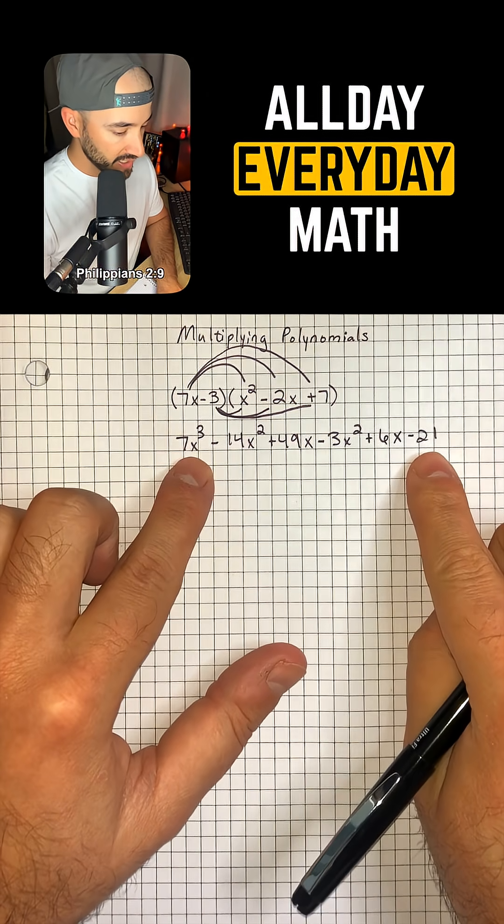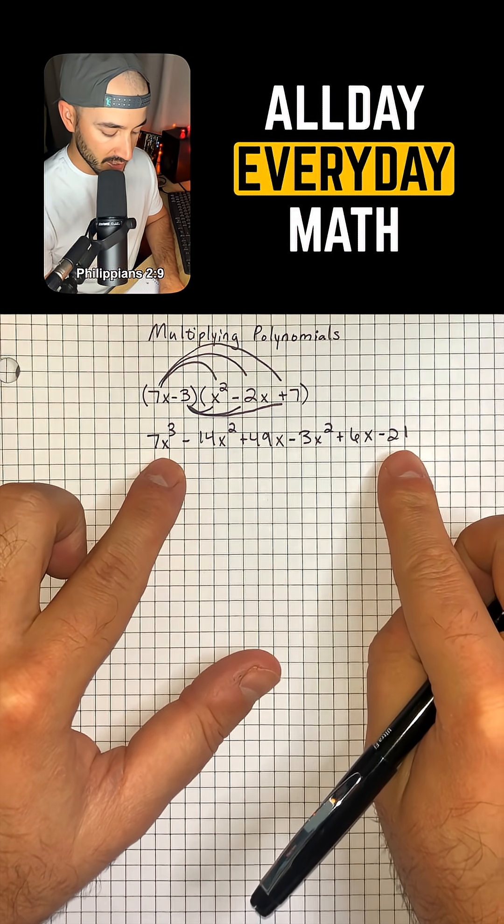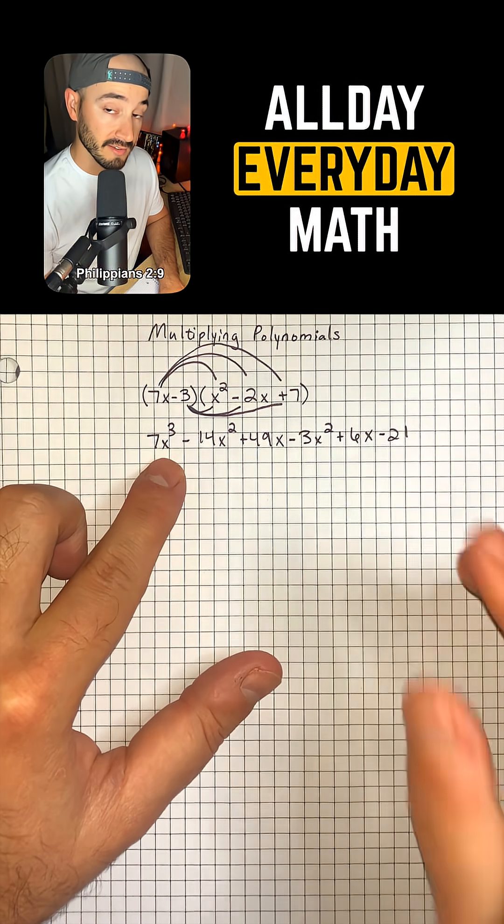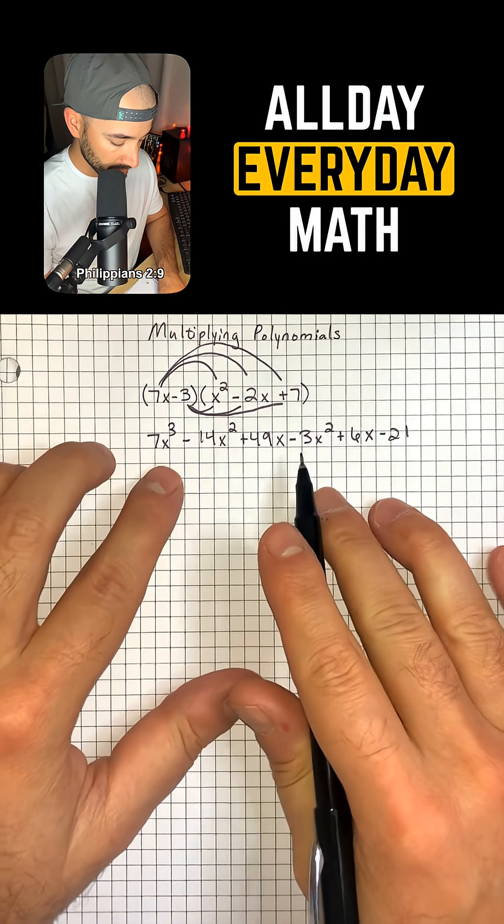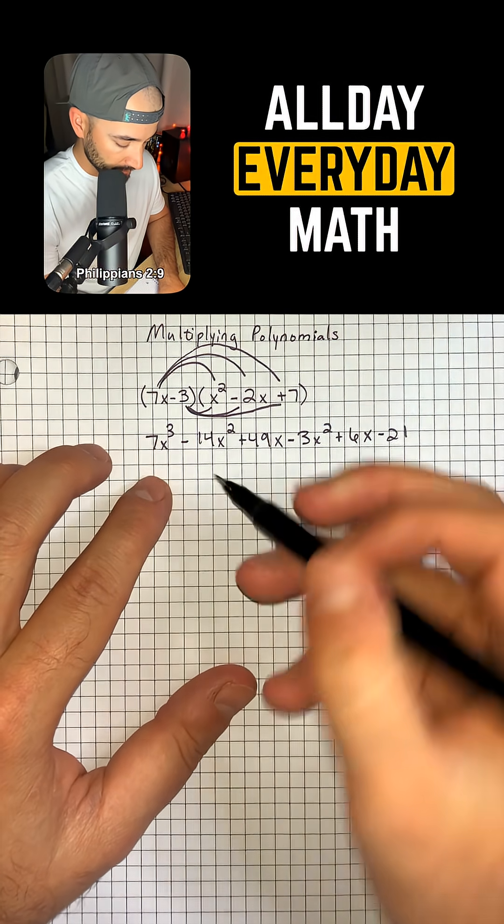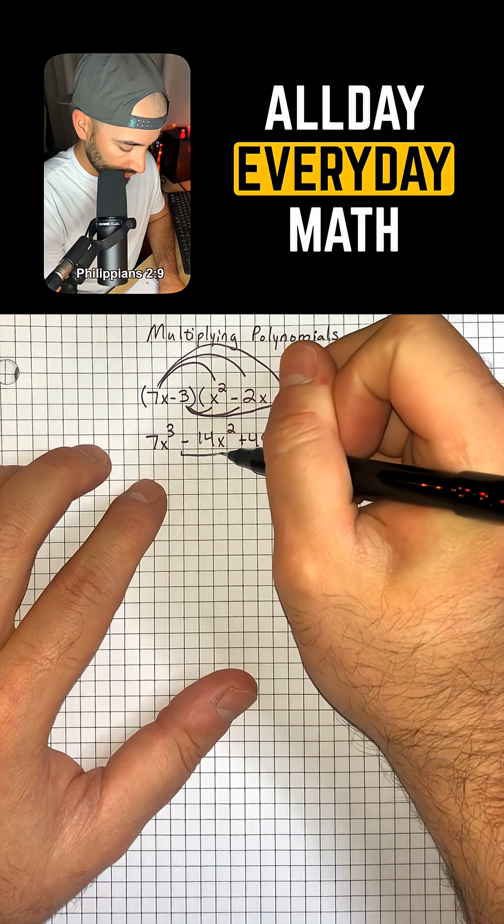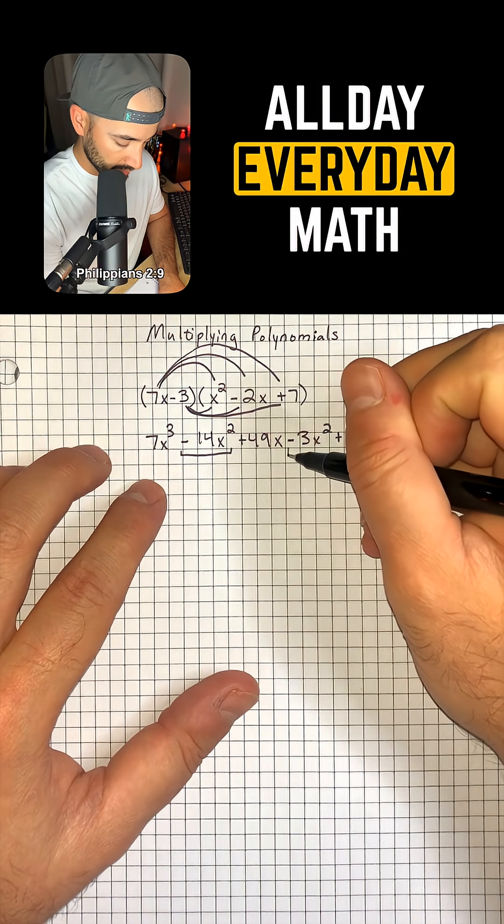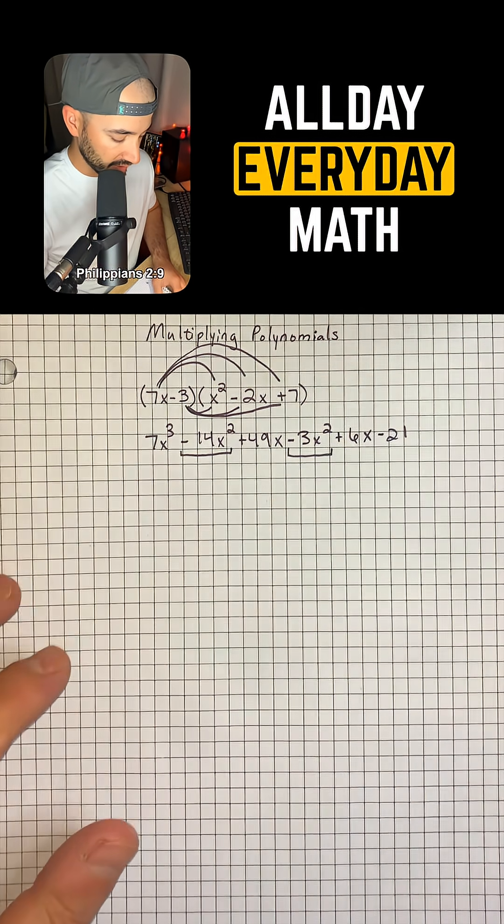So now we have this new expression, and what we have to do now is look and see if we have to combine any like terms. Right off the bat, I see that we have this term and this term that both have an x squared.